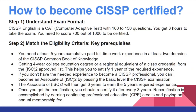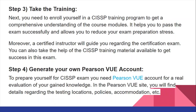Recertification is accomplished by earning Continuing Professional Education (CPE) credits and paying an annual membership fee. Step 3 – Take the Training. You need to enroll yourself in a CISSP training program for a comprehensive understanding of the course modules. This helps you to pass the exam successfully and reduces your exam preparation stress. A certified instructor will guide you regarding the examination. You can also use available CISSP training material to help you succeed.